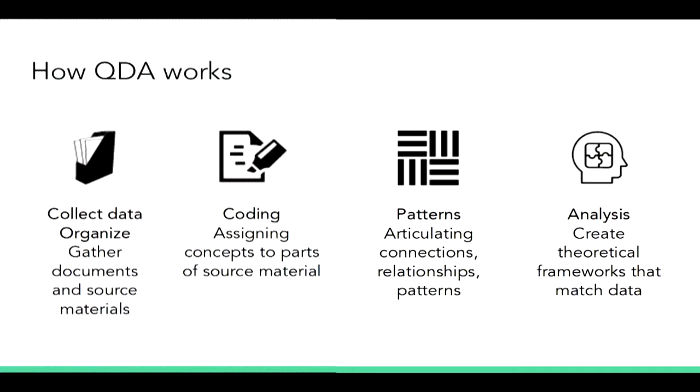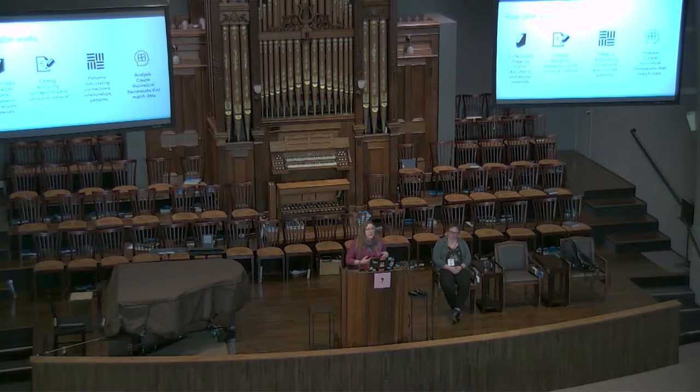So how does QDA work? Typically there's collecting the data of some kind, organizing it, gathering it, pulling together source materials — sometimes you're doing interviews or collecting observations. Then you do this coding process: qualitative data analysis of coding specific parts of the data and then finding patterns. There are different theoretical ways to think about those patterns, but you're articulating the connections, relationships, and patterns in the data that you find. Finally you create this analysis, using the theoretical and substantive knowledge you have to understand what you find in the data.